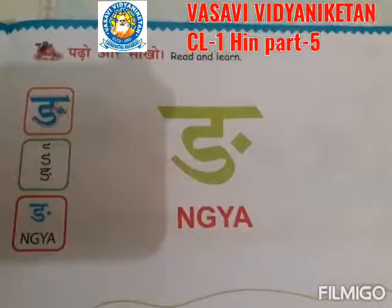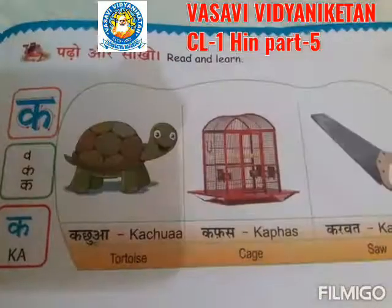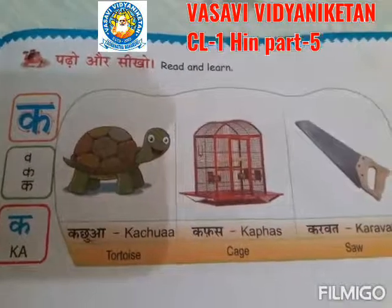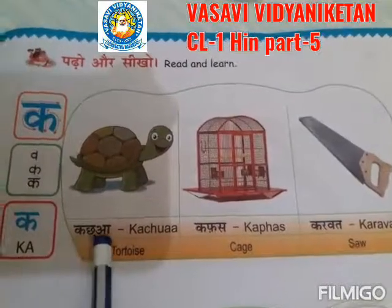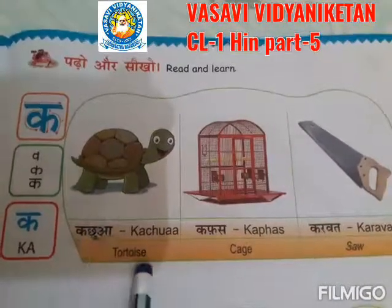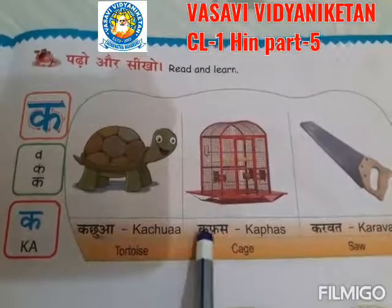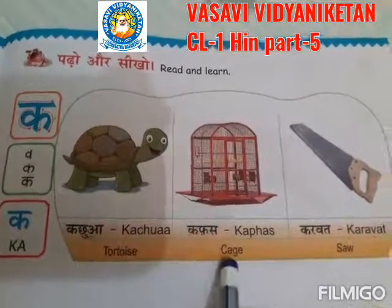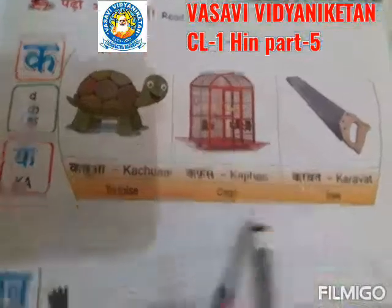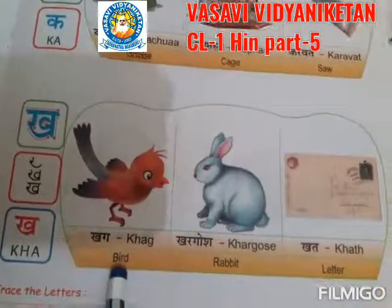Once again, we will repeat the words. One more time, we will revise the words. Anylei Kachwaang, Totoe is Khafas, Kees, Kharvat, Saankarwater, Saankar Kharvat, Saankar Kurt.